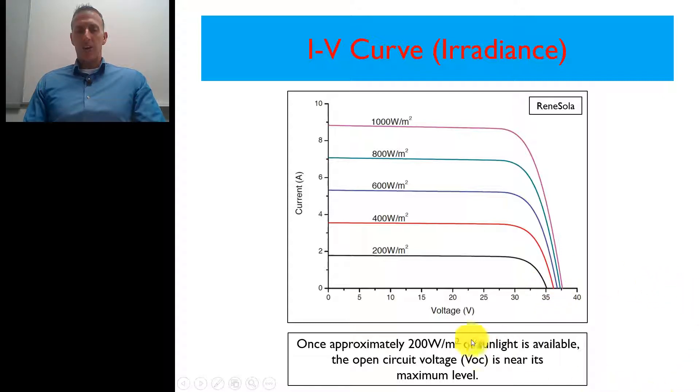What we're saying here is that once approximately we get 200 watts per meter squared of sunlight that's available, that open circuit voltage, the VOC, which is right here, it's the maximum voltage that module puts out, it is going to be near its maximum level.